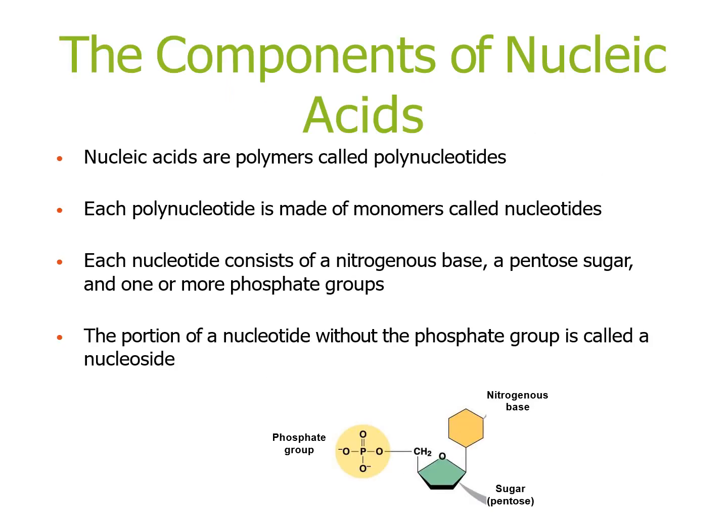Nucleic acids are polymers called polynucleotides. Each polynucleotide is made up of monomers called nucleotides, and each nucleotide is made up of a nitrogenous base, a pentose sugar, and one or more phosphate groups. The portion of a nucleotide without the phosphate group is called a nucleoside.